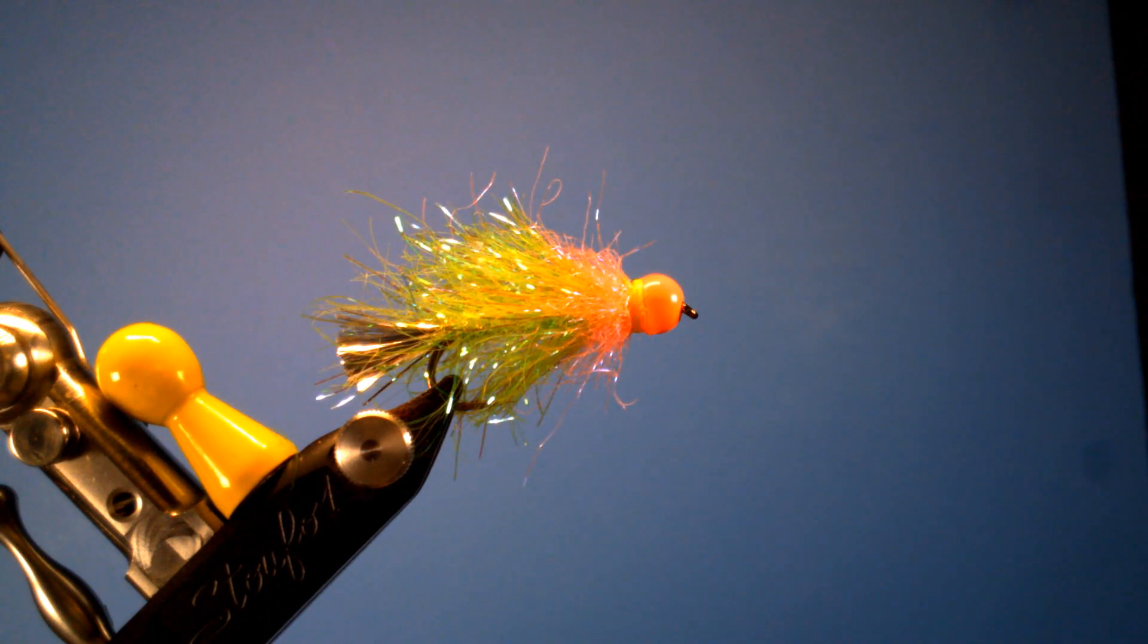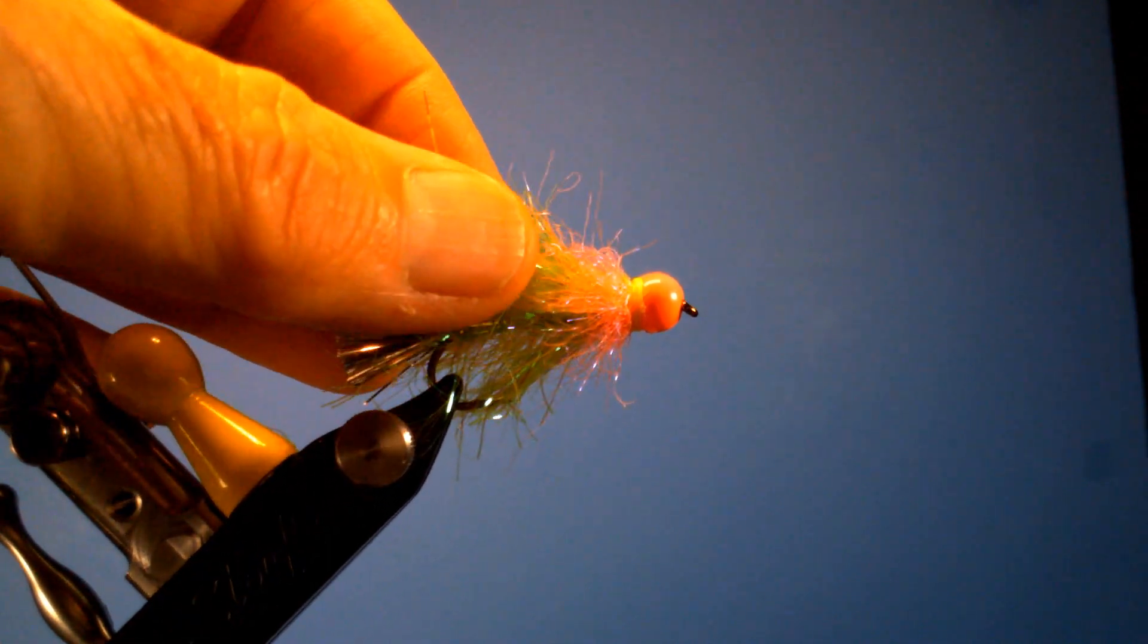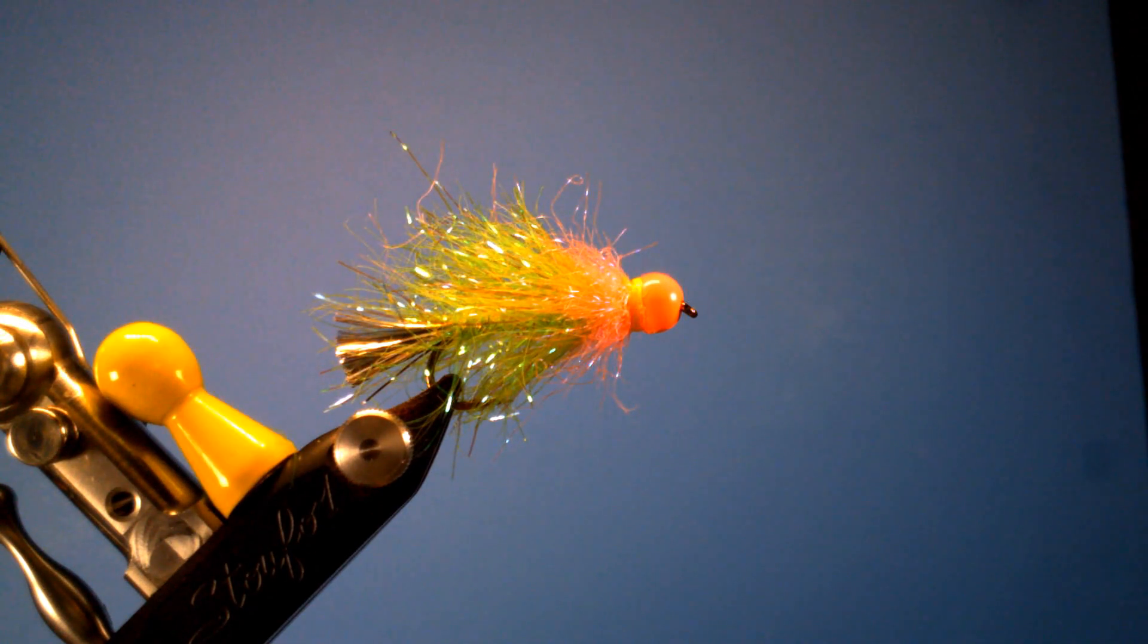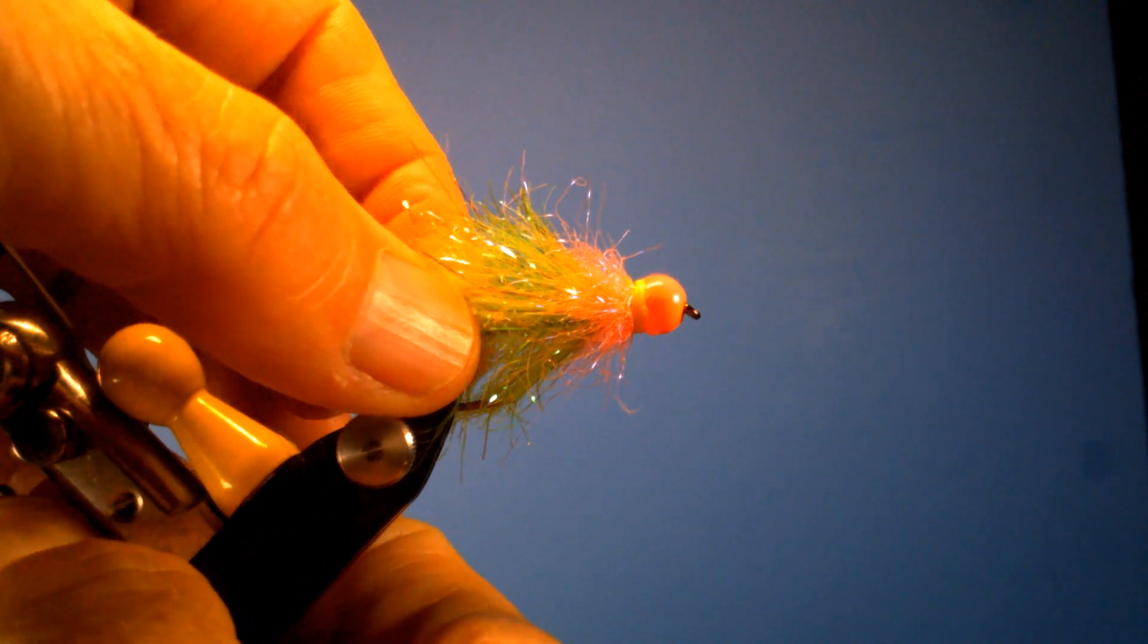They all have the basic concept. It's got a hot pink bead and some silver flash move for a tail. The only thing that changes is the color of the body. This collar stays the same, it's a hot pink ice dub. Let's go ahead and get tying.